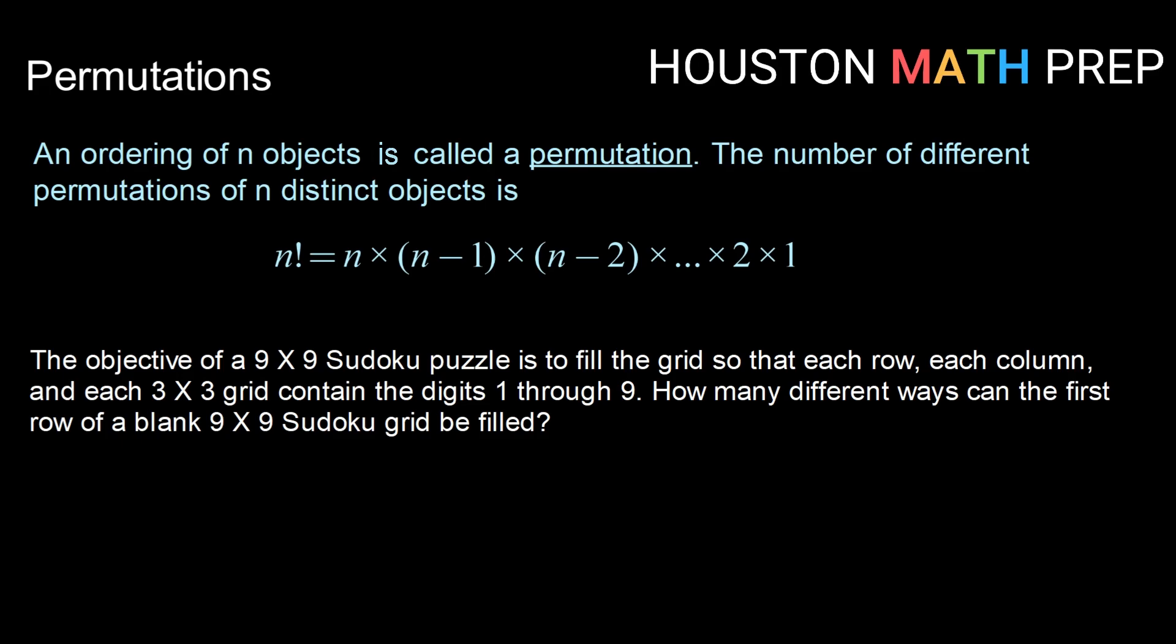Permutation is an ordering of n objects. So it is the number of different ways that we can order n distinct objects. This should seem fairly familiar from our video on the fundamental counting principle. So the number of ways to put n objects in order is what we call n factorial.